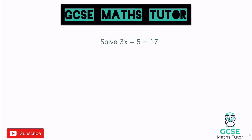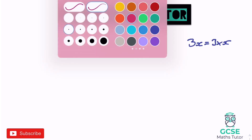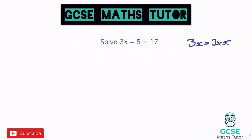We've just got to think about reversing whatever is happening to that letter. 3x means 3 times x — don't forget that. So we need to reverse the entire process: we've got 3 times x, then add 5, and we get 17.